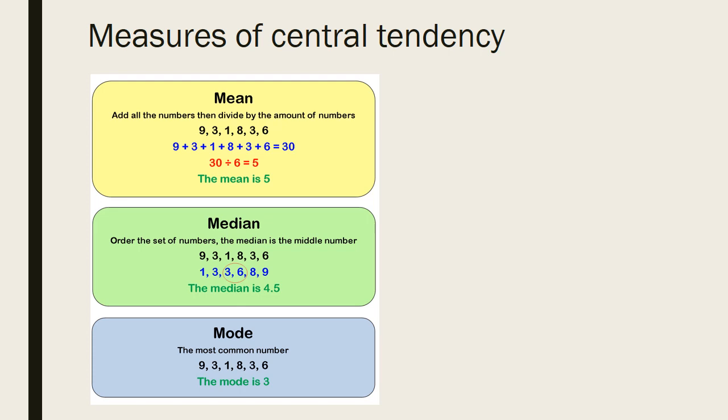The mode is the most common number. Data sets can have two modes which is called bimodal or more. Some data sets have no mode. The purpose of measures of central tendency is to find the single score that best represents the entire group. The measure that is most appropriate depends on the data set.